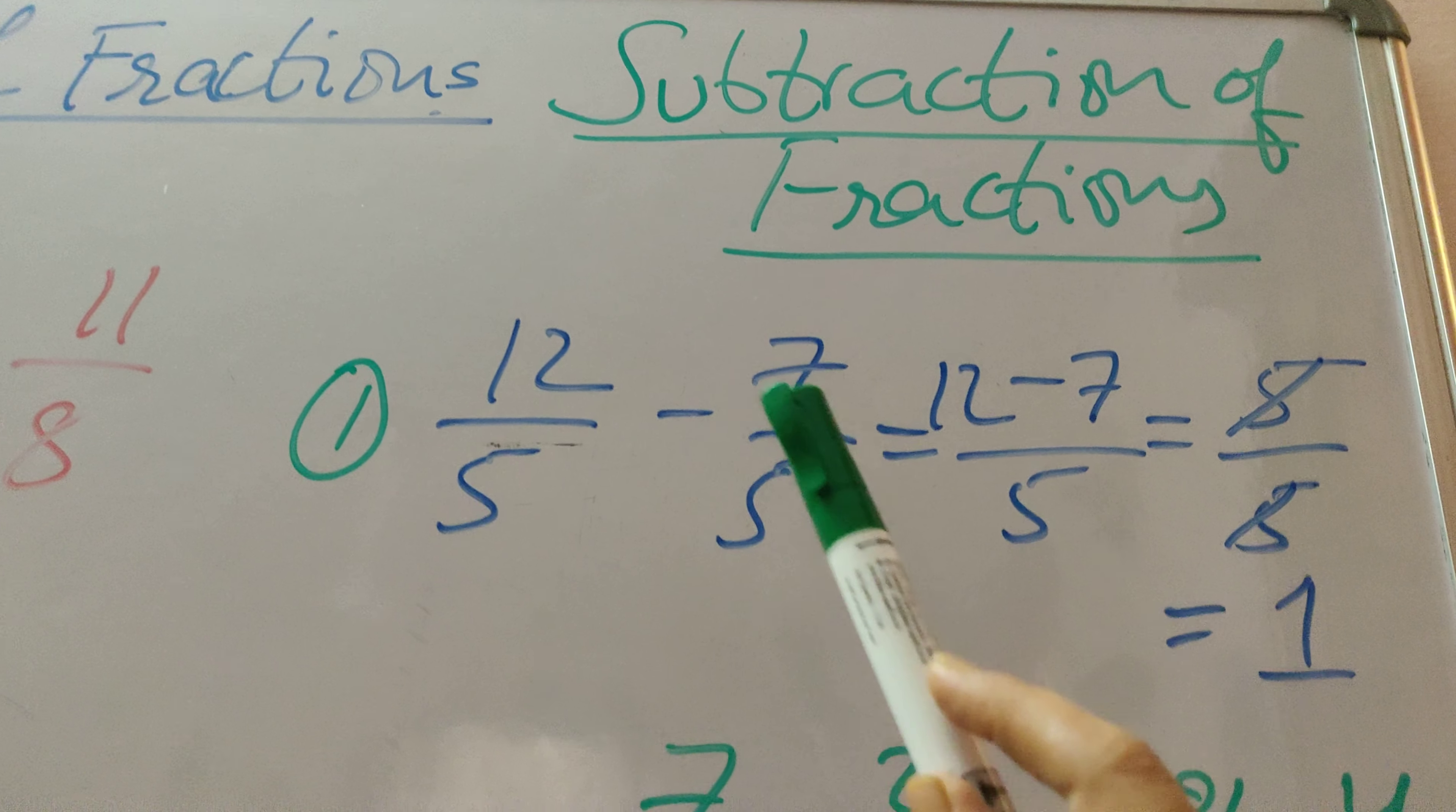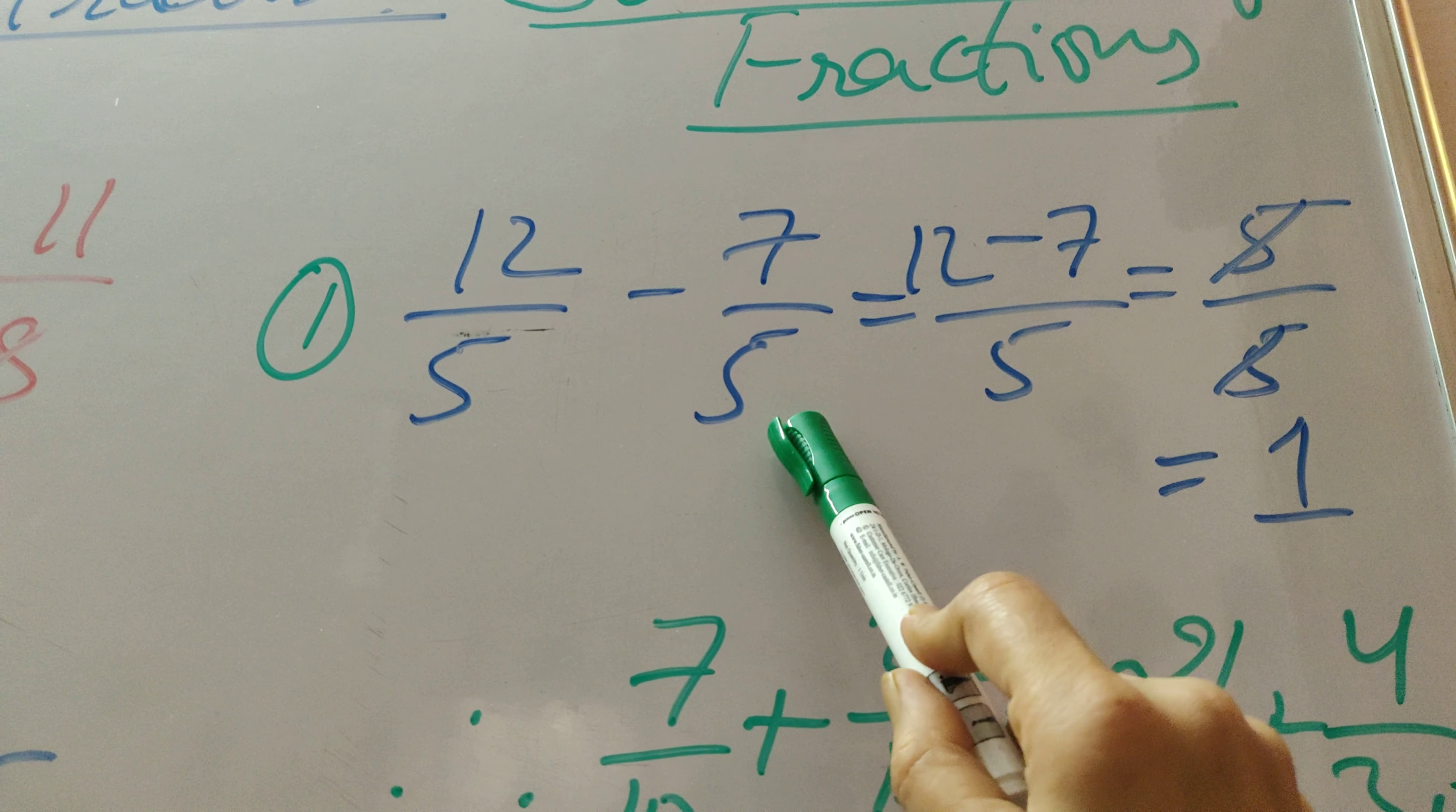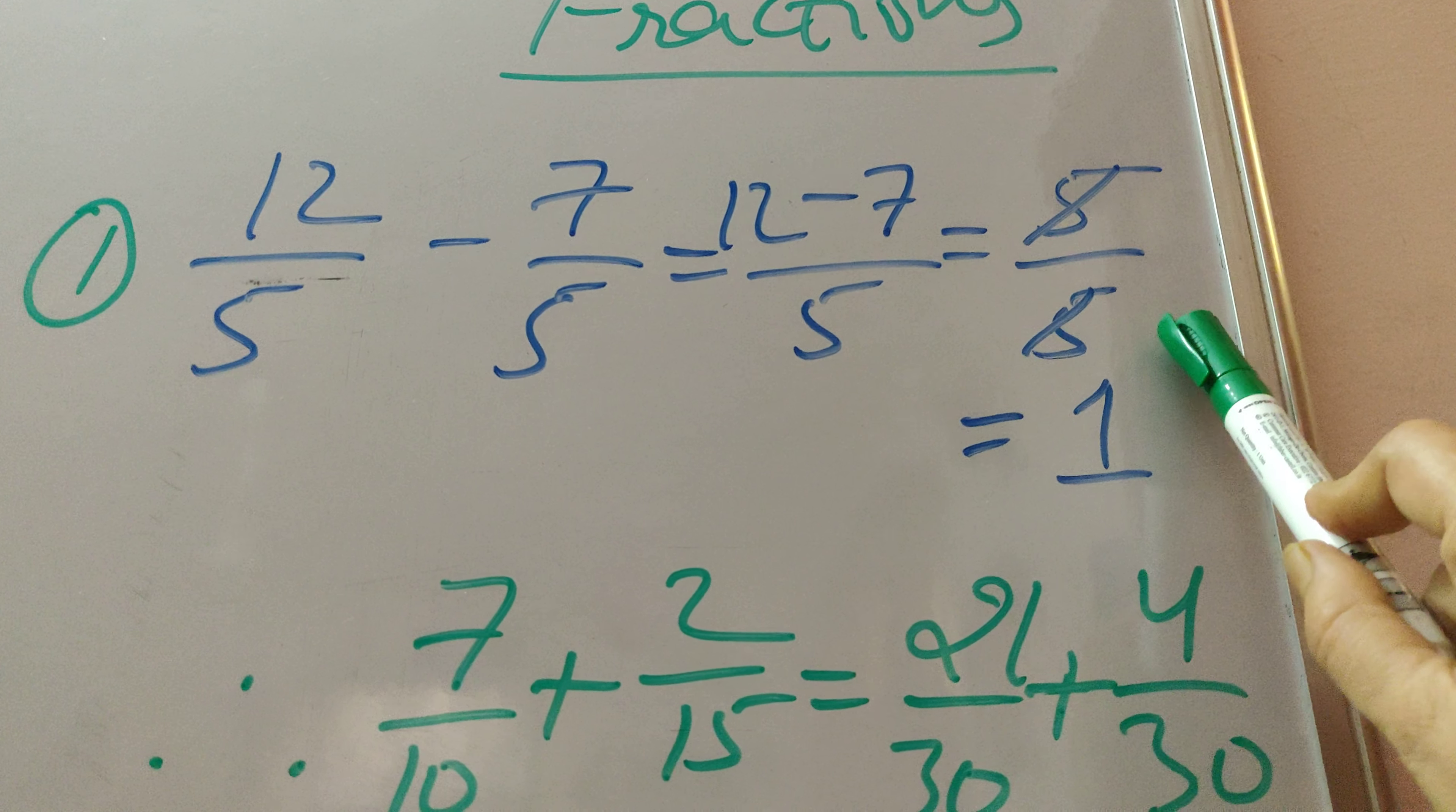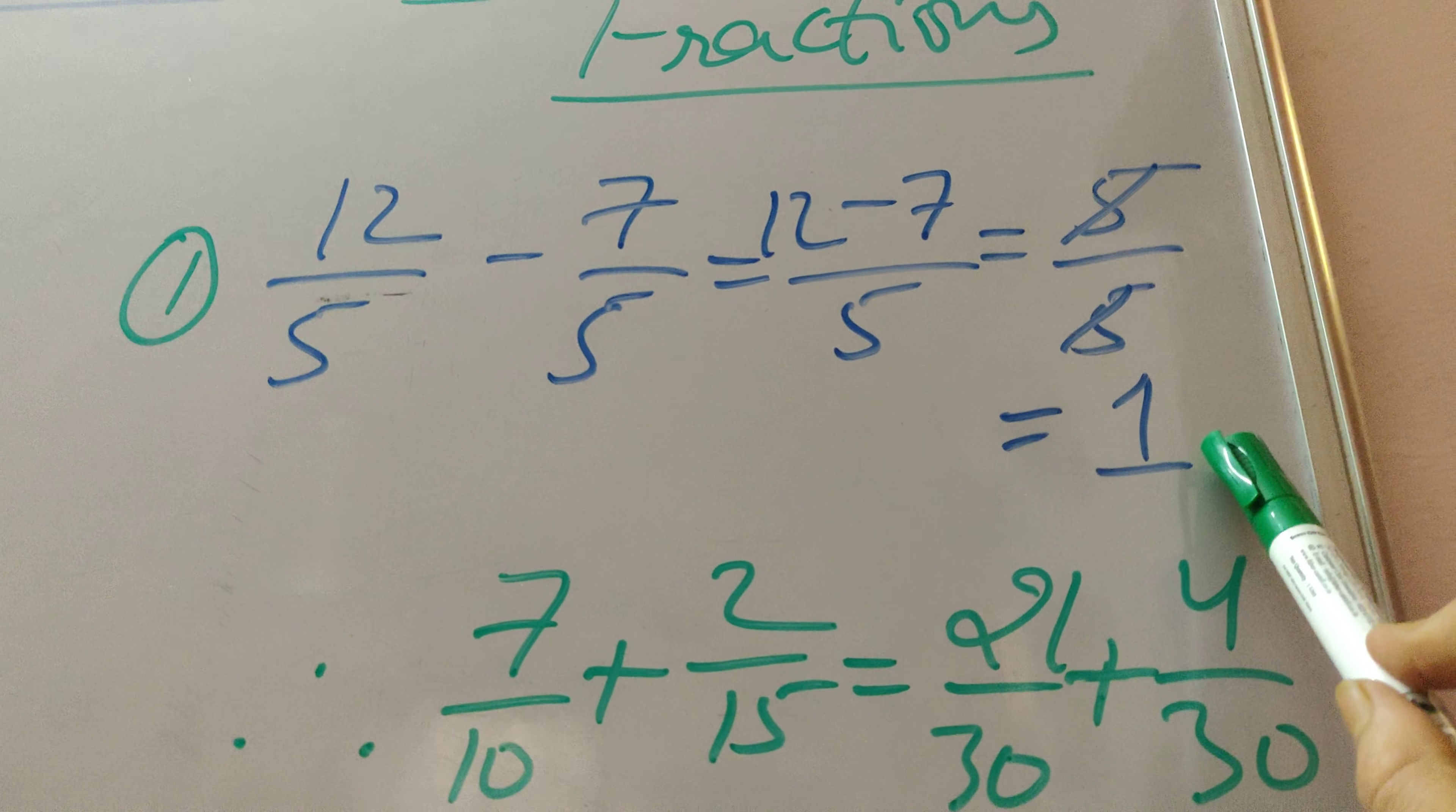Now, similarly if we have to subtract two fractions with the same denominator, we can do it like this. 12 by 5 minus 7 by 5 has the same denominator, both have 5 as the denominator. So 12 minus 7 by 5, that is equal to 5 by 5, and we can simplify that to get the answer as 1. For common denominators, this subtraction is also quite easy.